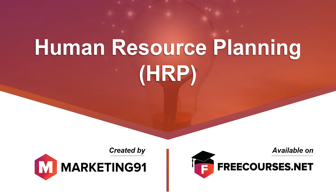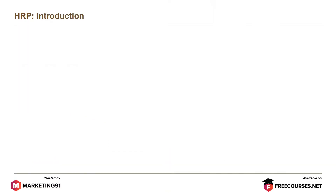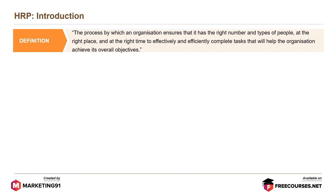Hello and welcome to Marketing91.com. Let's start with understanding Human Resource Planning or HRP. HRP can be defined as the process by which an organization ensures that it has the right number and types of people at the right place and at the right time to effectively and efficiently complete tasks that will help the organization achieve its overall objectives.